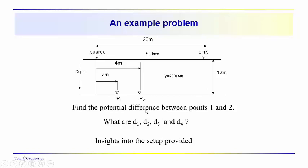You're supposed to find the potential difference between these two points, P1 and P2. As always, that turns out to be a problem of finding out what the distances are between the source to the potential electrode, the potential electrode to the sink, and doing that for each of the potential electrodes.